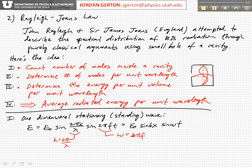I've enumerated here the steps in the idea that Rayleigh-Jeans had for trying to describe the spectral distribution of the blackbody radiation through their logic using classical arguments. So let's take these one at a time.